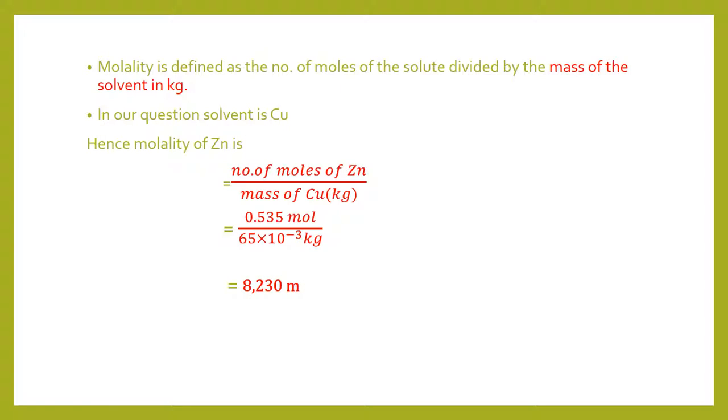It is important to note that we are considering the mass of the solvent and in our question the solvent is copper. Hence molality of zinc is number of moles of zinc divided by the mass of copper in kilogram. Hence we get 0.535 mole divided by 65 into 10 to the power minus 3 kilogram, which is the conversion from gram to kilogram, and we get the value of 8.230 mole solution.